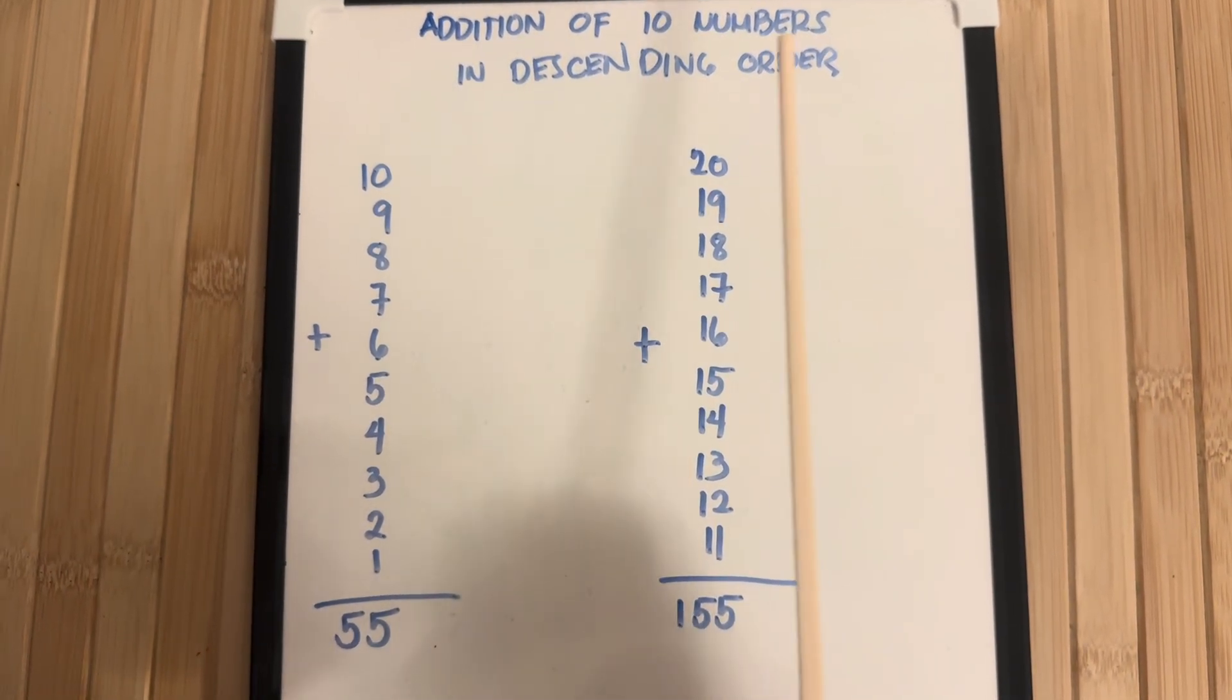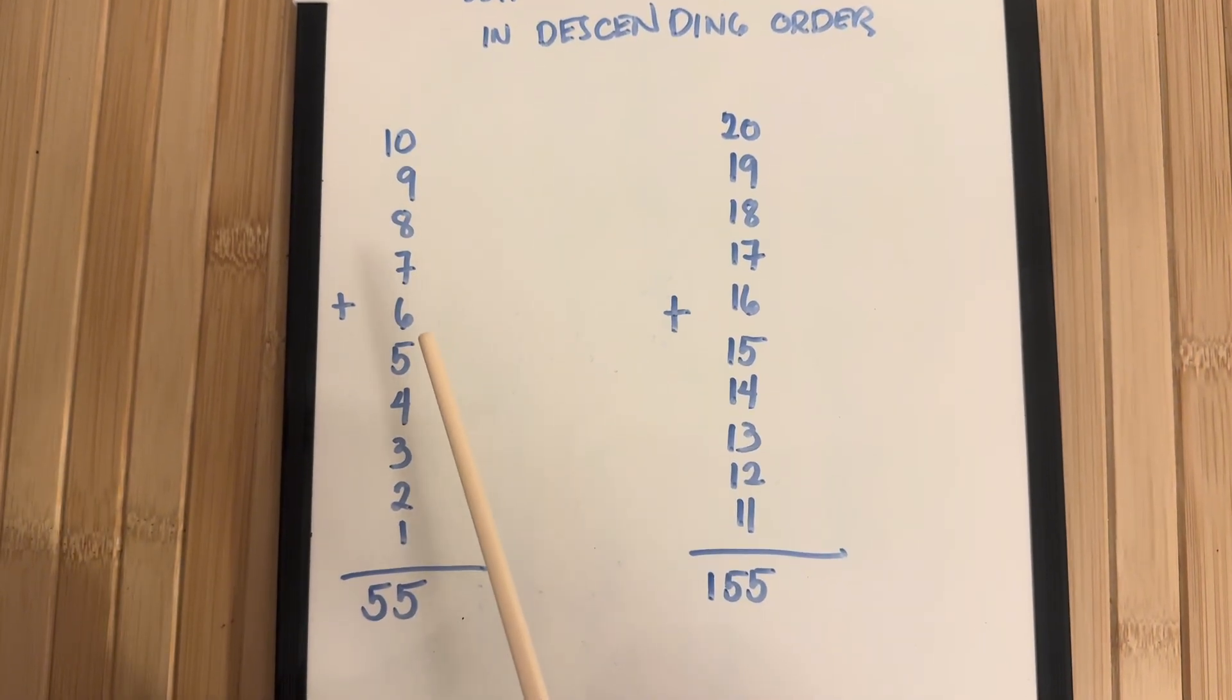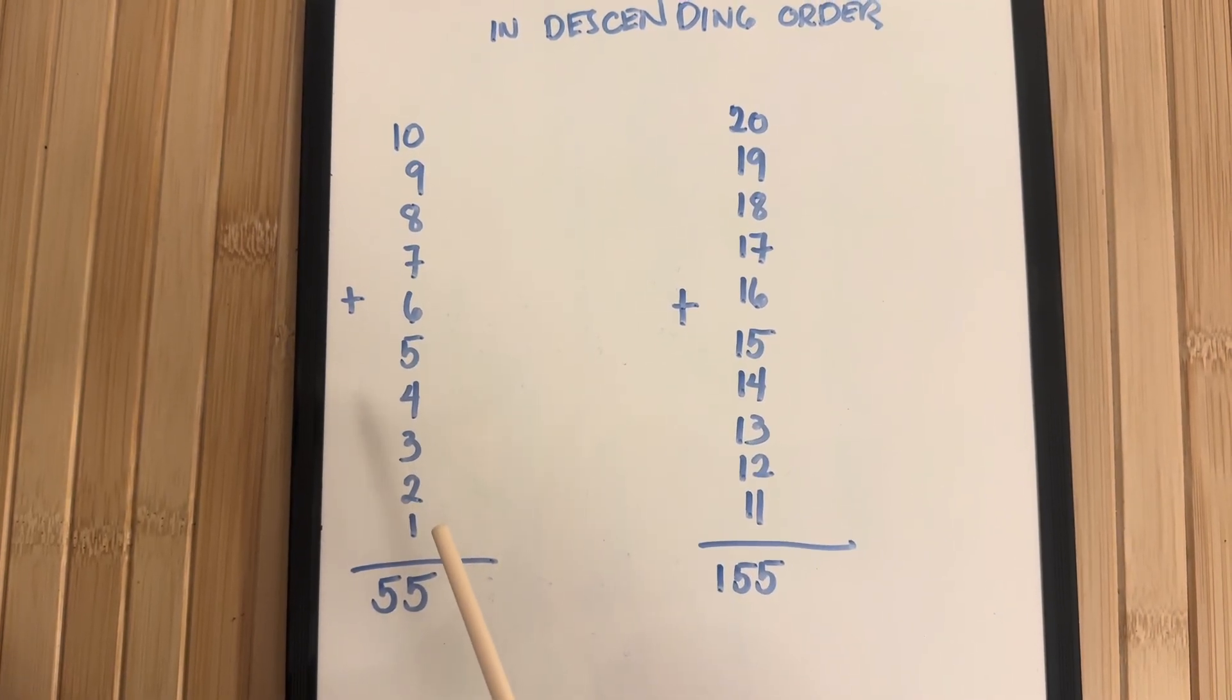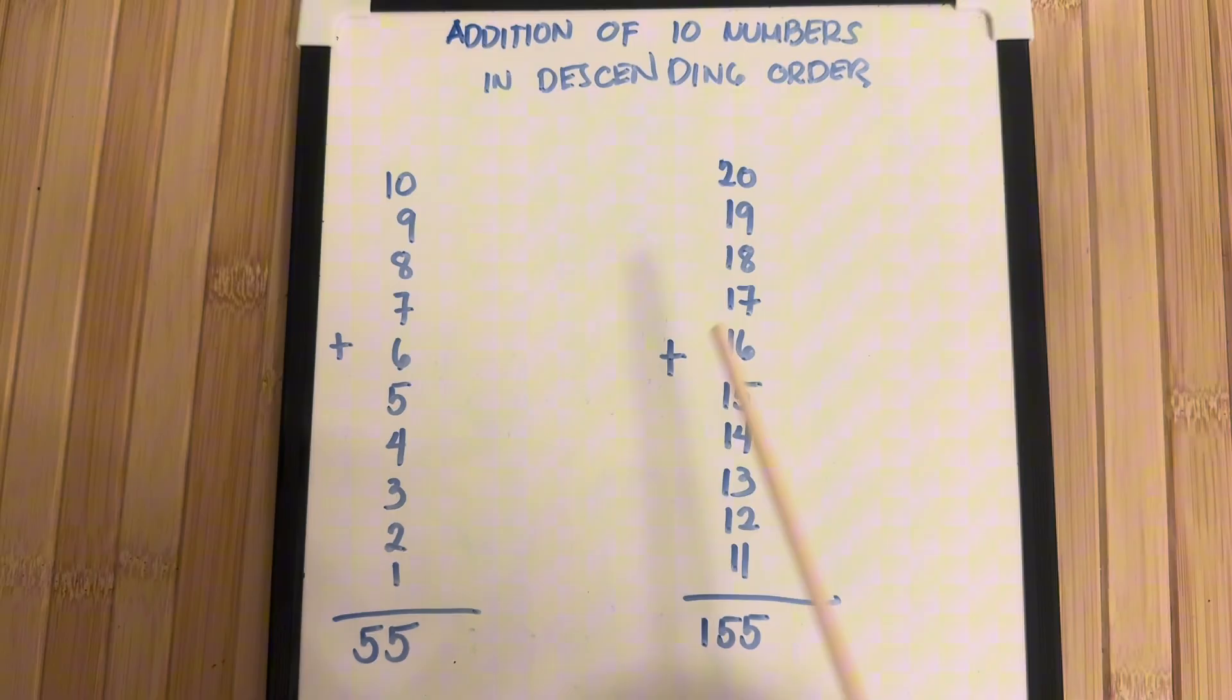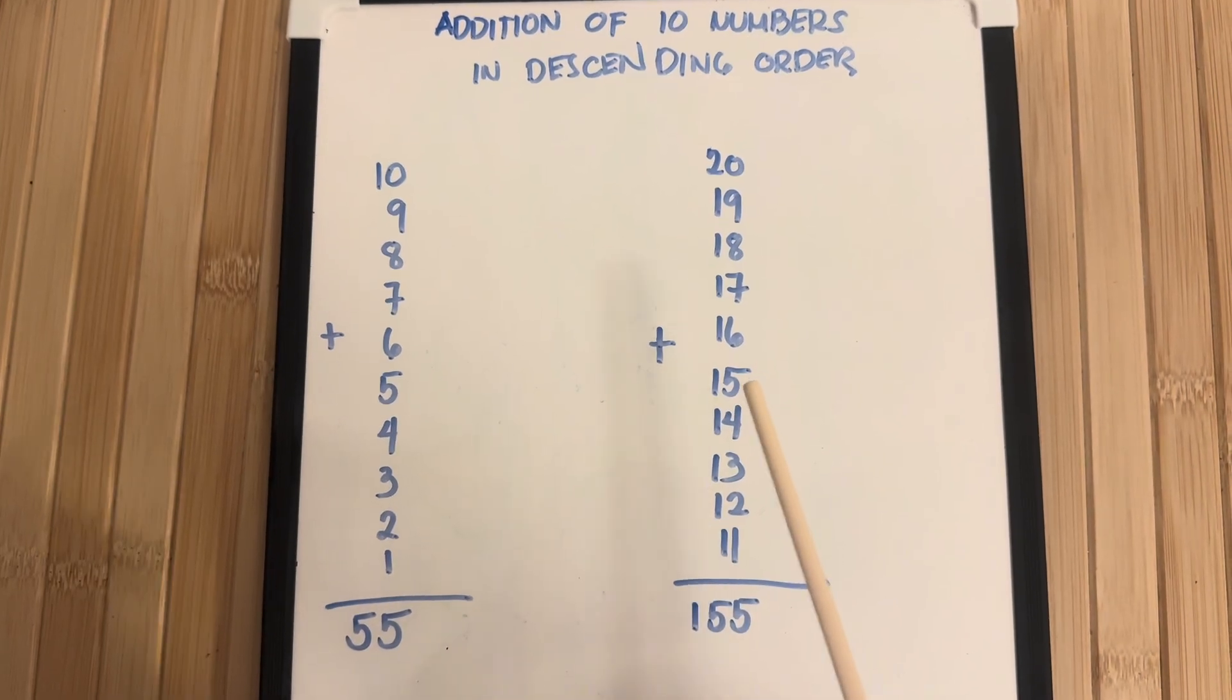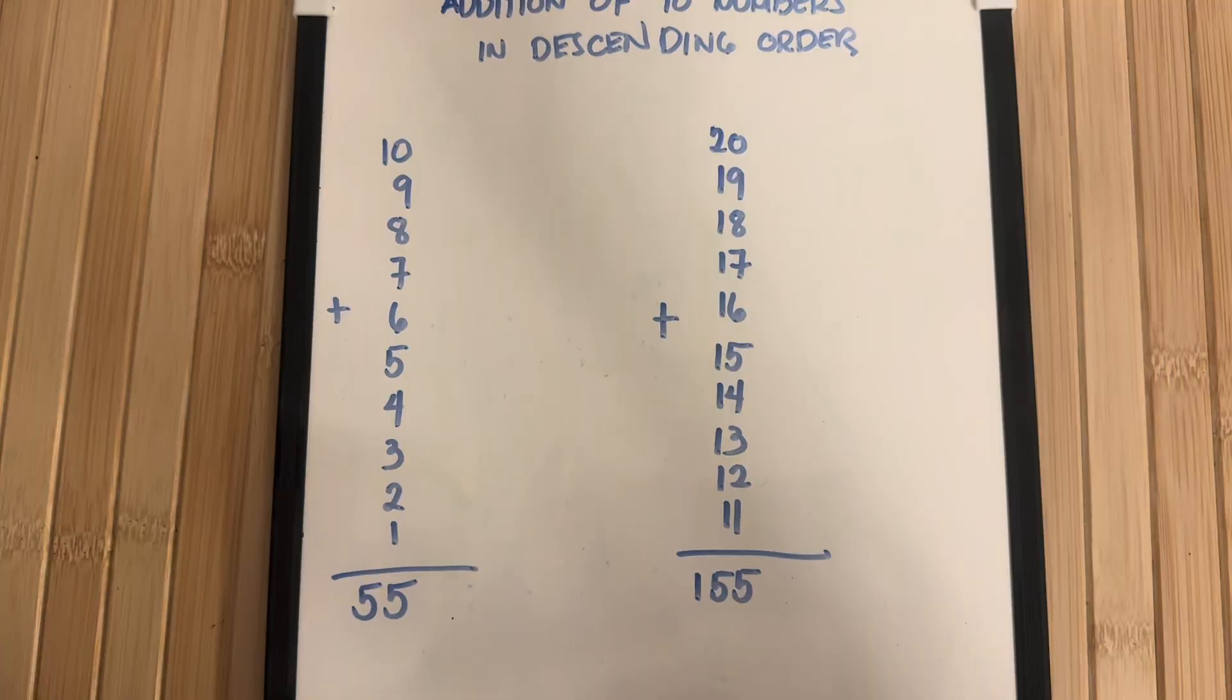An addition of 10 numbers in descending order. 10 plus 9 plus 8 plus 7 plus 6 plus 5 plus 4 plus 3 plus 2 plus 1 equals 55. Next, 20 plus 19 plus 18 plus 17 plus 16 plus 15 plus 14 plus 13 plus 12 plus 11 equals 155.